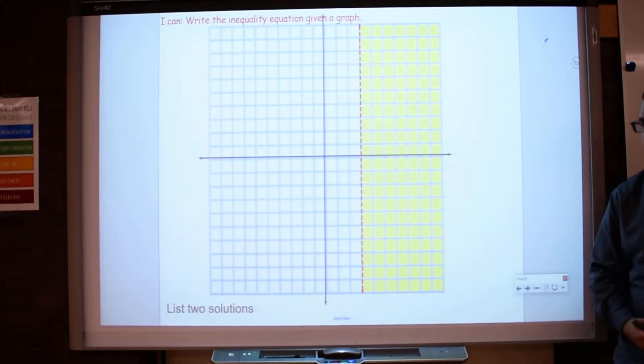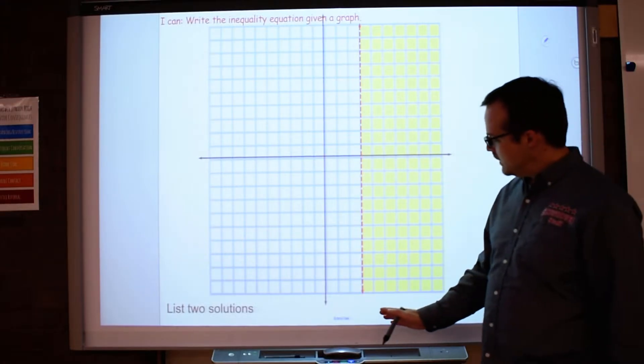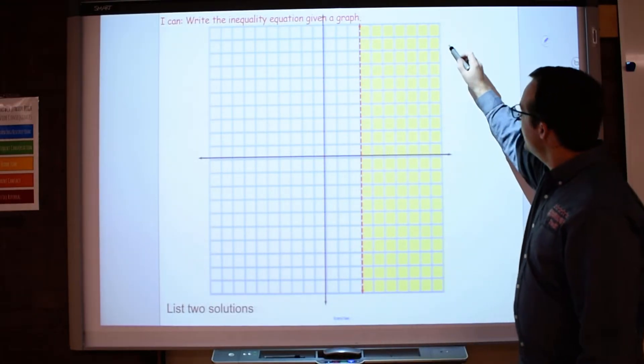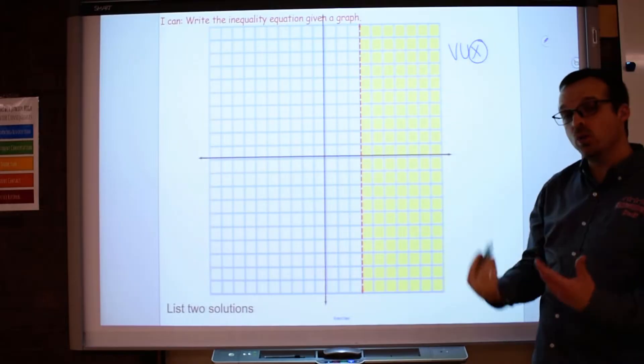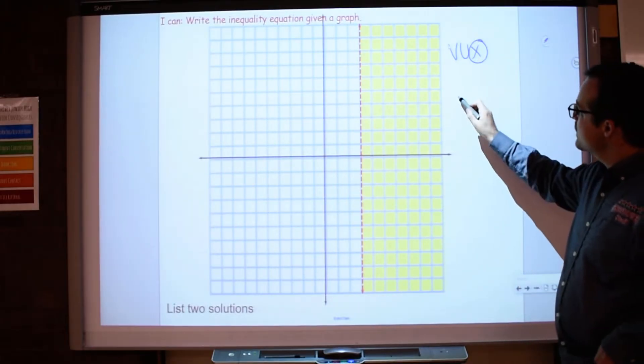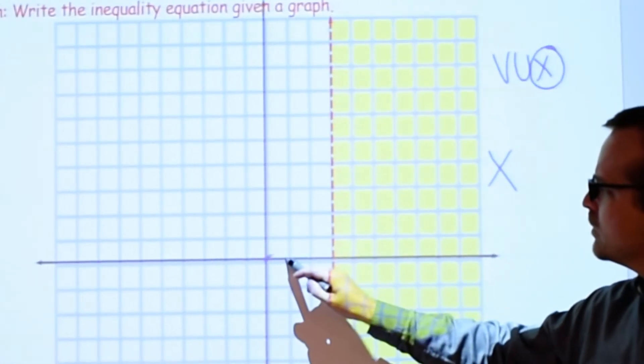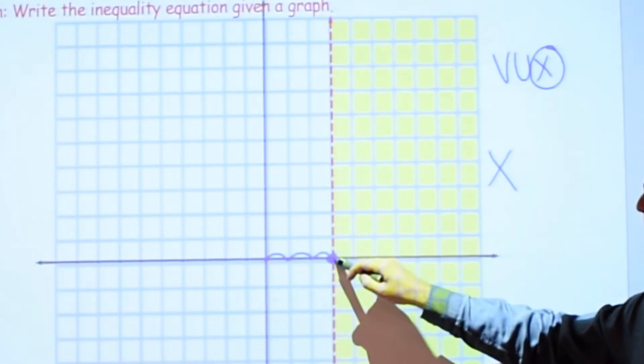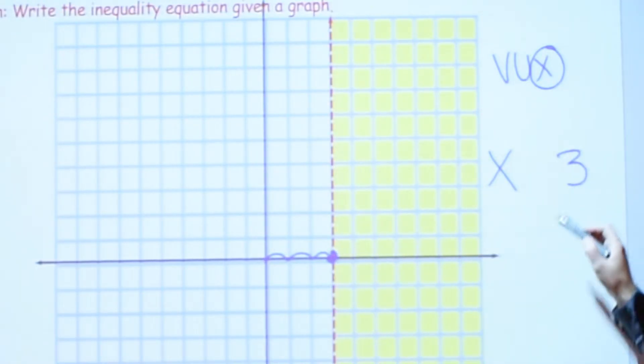All right. Go ahead and pause the video and try this one out. Okay. Look right here. I have a vertical line. That would be a VUX, right, which means x would be the only thing in my inequality. So it's going to be x is something to, let's see where we're at here. We're at 3 on the x-axis. So x is something to 3.